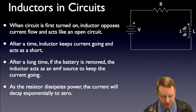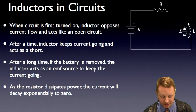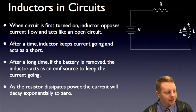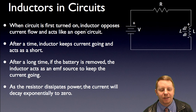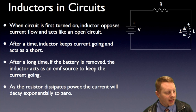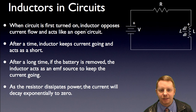When the circuit is first turned on the inductor opposes current flow and therefore it's going to act like an open circuit, but when it's been on for a little bit the inductor keeps the current going and acts as a short. After a long time, if the battery is removed, the inductor acts as an EMF source to keep the current going. Whatever is happening, it wants to keep it in that state — it resists change. And as the resistor dissipates power, the current will decay exponentially to zero.